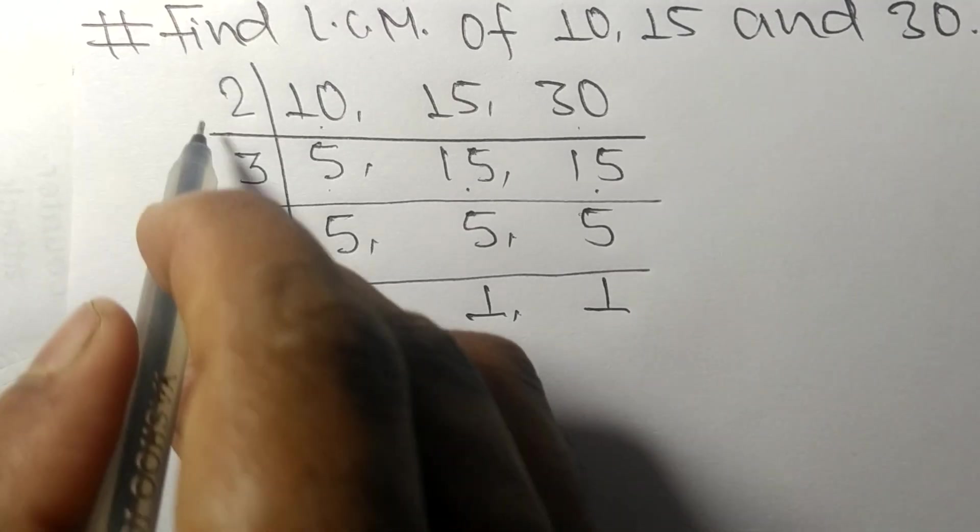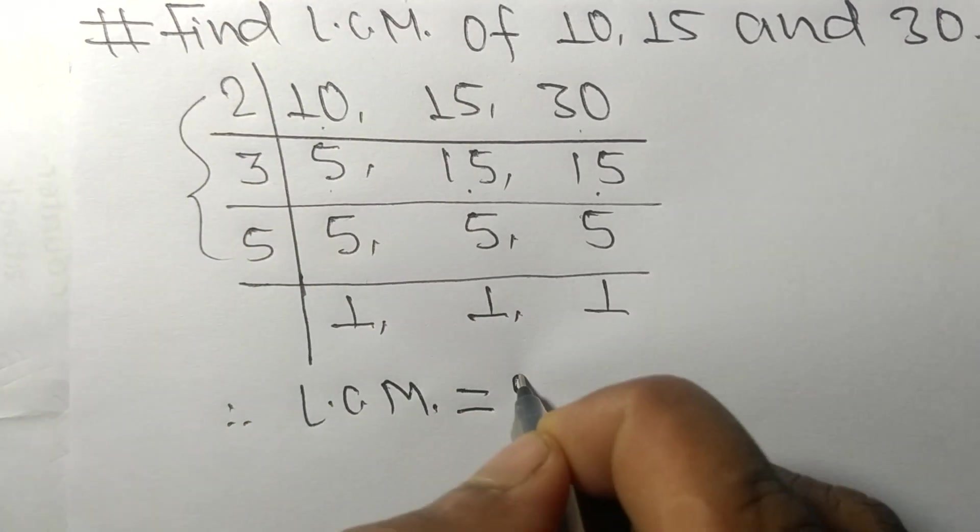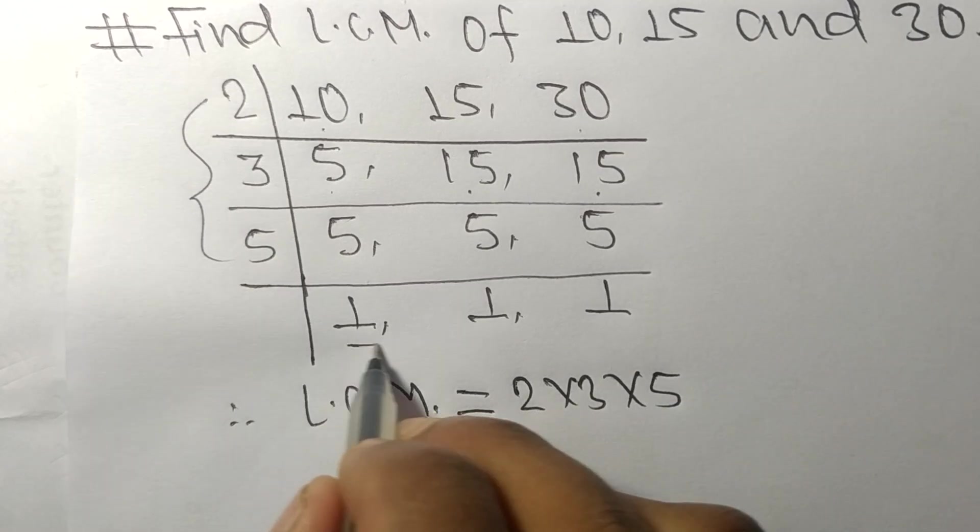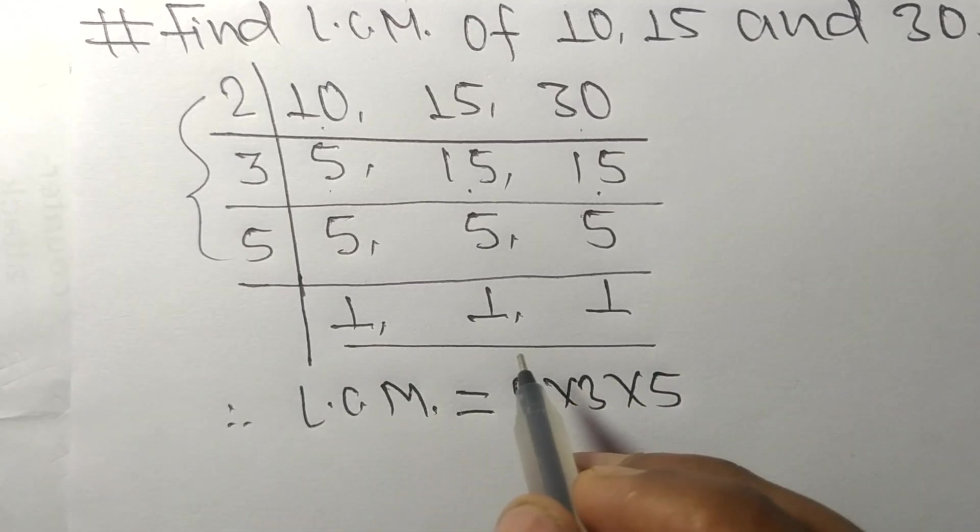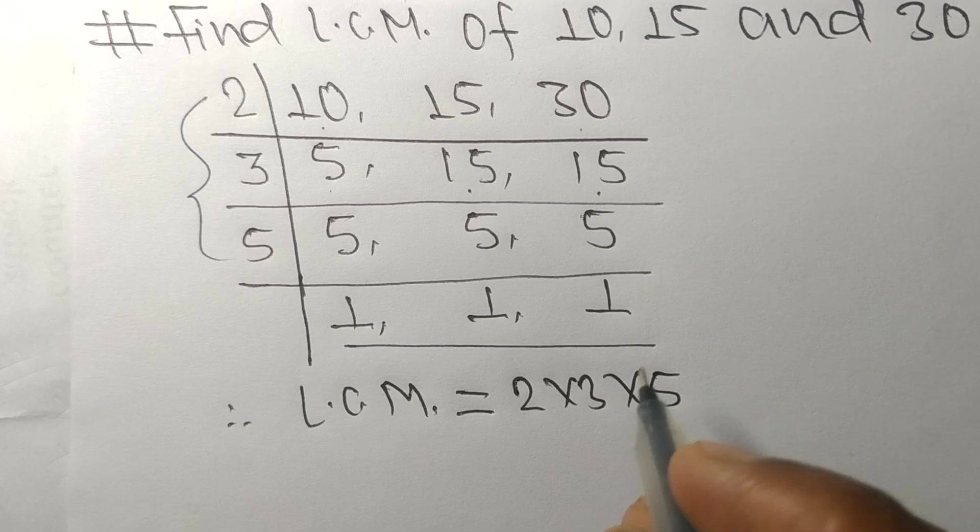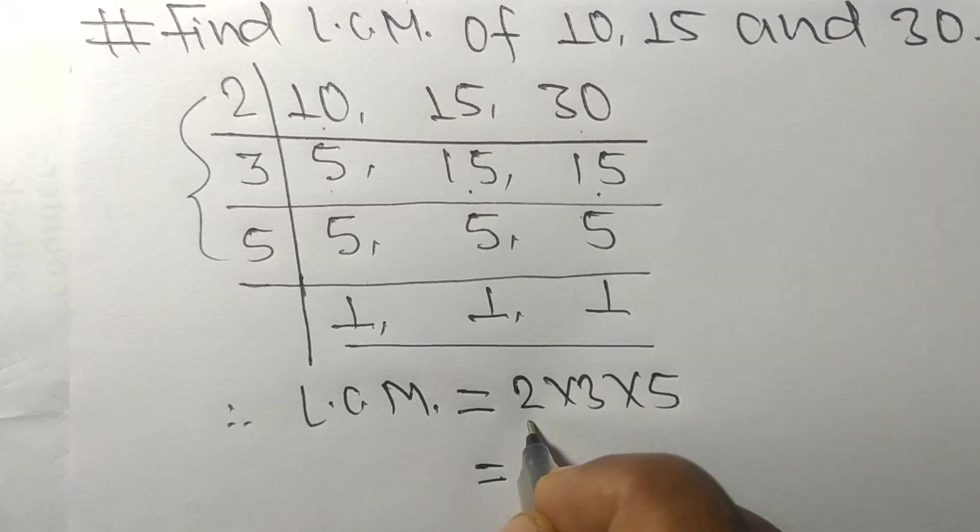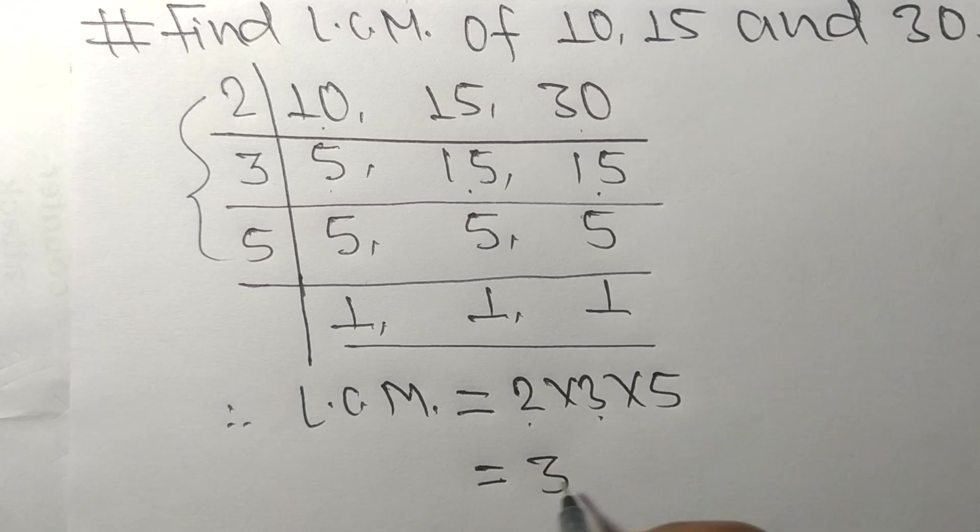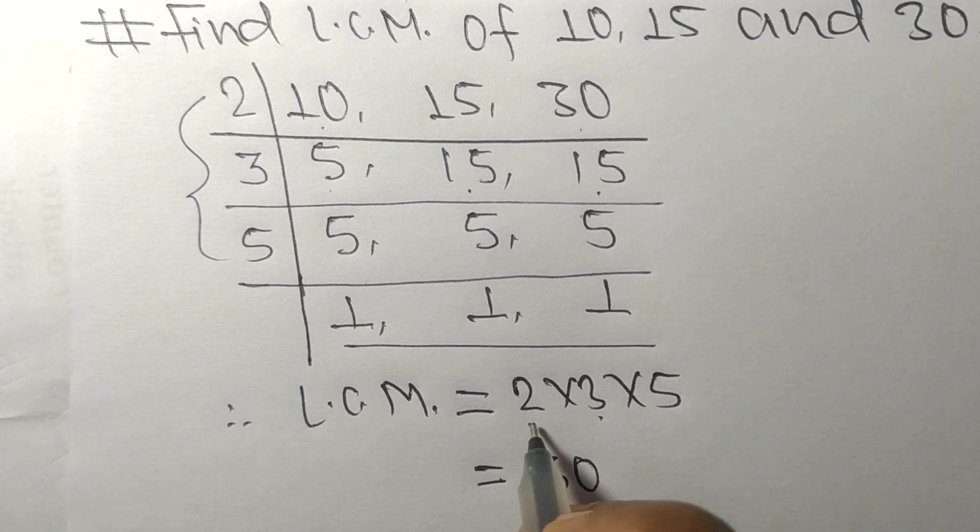From this side we have 2, 3, and 5. From the other side it is only 1, so we can neglect that. 2 times 3 equals 6, 6 times 5 equals 30. So by multiplying all these numbers we get 30.